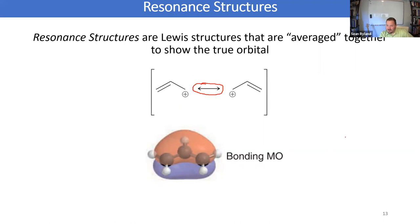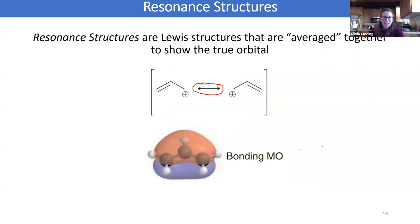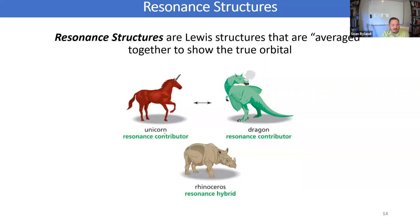A student mentioned that the book gave an example about a peach and a plum that was really helpful. Another analogy from a book I've taught from before: if you took a unicorn and a dragon — both imaginary — and averaged them together, it might look like a rhinoceros, which is a real thing. Resonance is like that — you don't have either of the imaginary cases; you have something that's a mixture of the two of them.